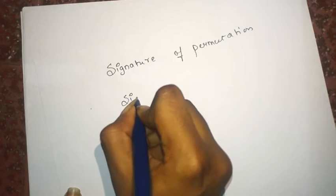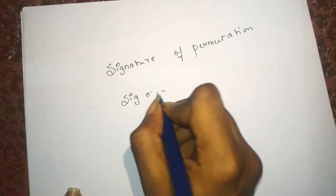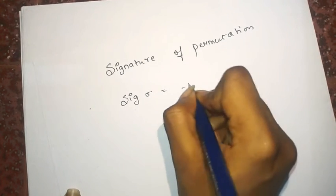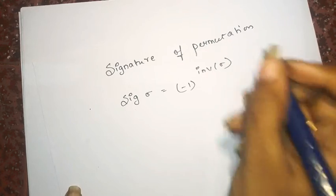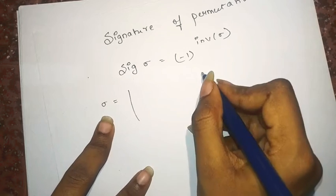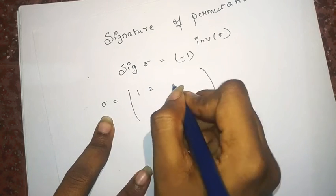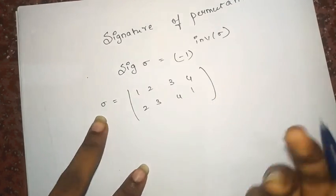It has a unique formula. The signature of the permutation, I'll represent the permutation by Sigma, is minus 1 to the whole power inverse of Sigma. I have already explained how to find the inverse of Sigma when it is just a single permutation, like 1 2 3 4 where 1 is mapped to 2, 3, 4, 1.